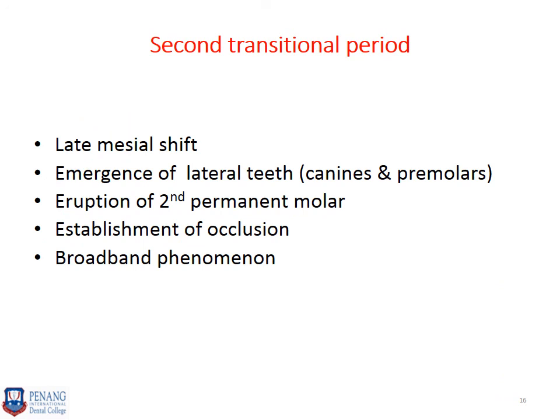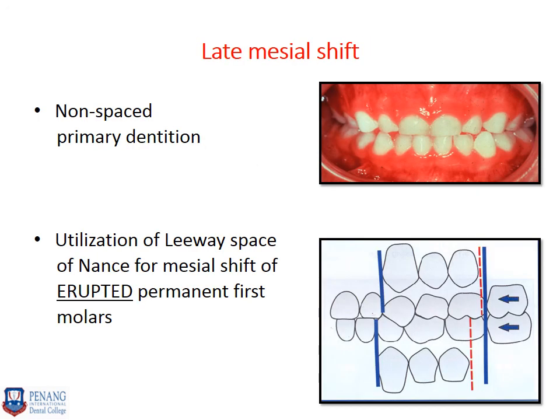The third phase in the mixed dentition is the second transitional period. In this period we see the late mesial shift, emergence of lateral teeth — the canines and premolars — eruption of the second permanent molars, establishment of occlusion, and the broadband phenomenon. The late mesial shift occurs in a non-spaced primary dentition, unlike the early mesial shift which occurs in a spaced dentition. Because there was no space in the primary dentition, tooth movement forward occurs through utilization of the leeway space of Nance.